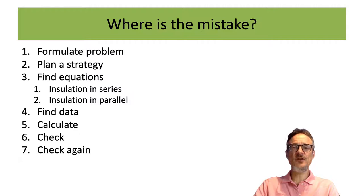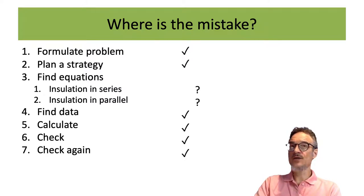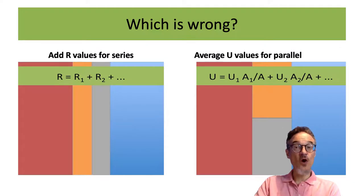So this was our procedure. This was the problem solving procedure. I think we've done the calculations correctly. There's not a problem there. I think the problem we've formulated is probably not bad. But I think there's probably a mistake in one of the equations that we used. And one of these equations is wrong. Which one do you think is wrong? I think the parallel one is wrong. And I'll show you why I think it's wrong.